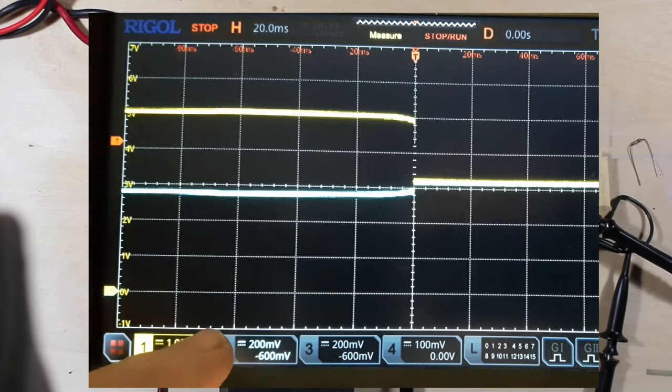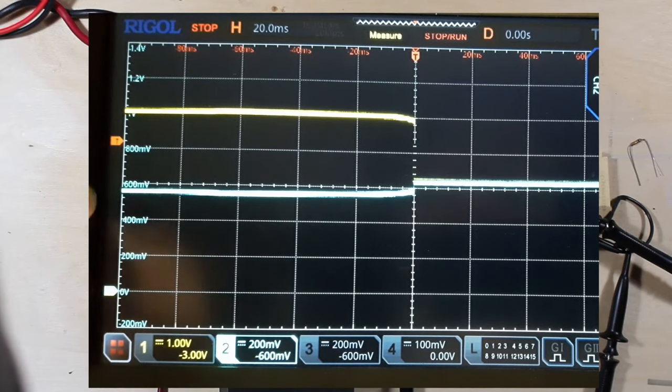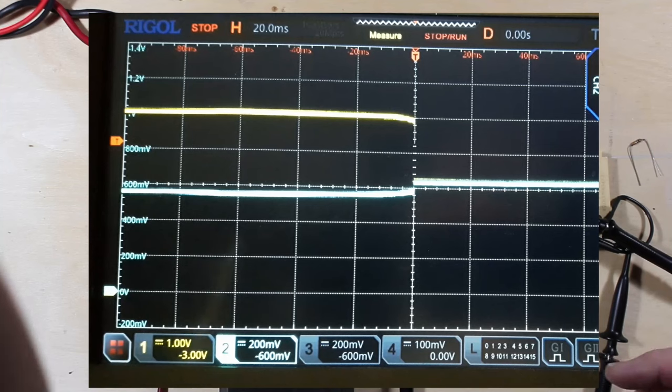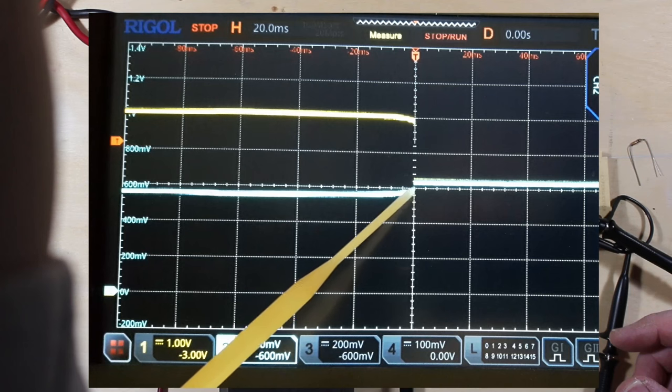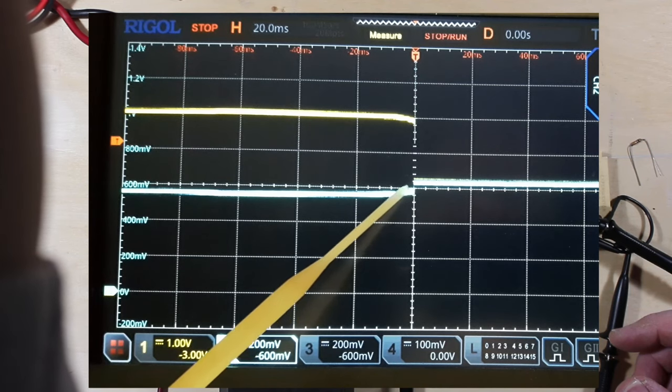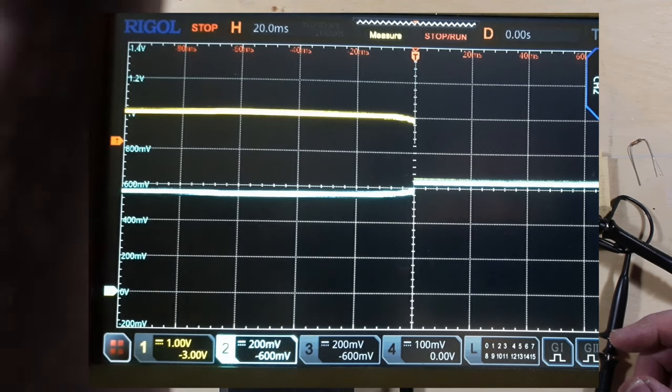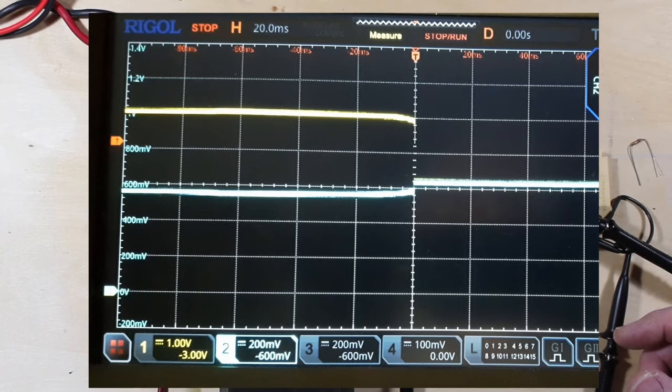But if I go over to the blue one and get that scale up, at the 600 millivolt scale here, you can see that it's switched here basically just shy of 600 millivolts is the gate voltage that's required to turn this SCR on.